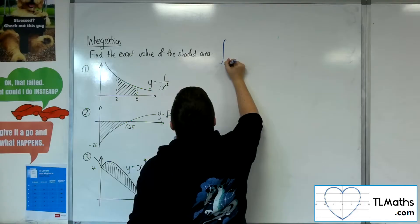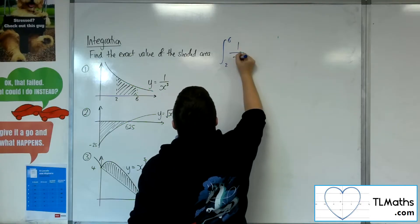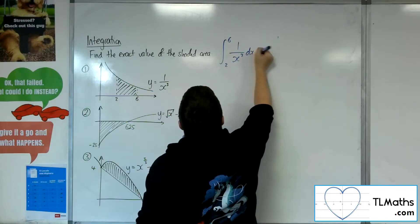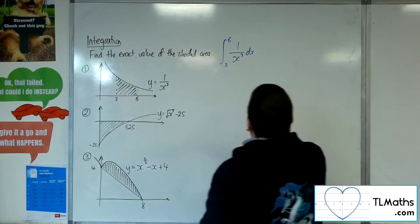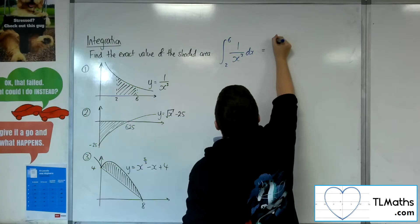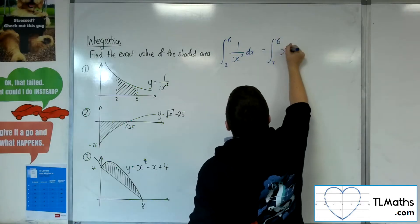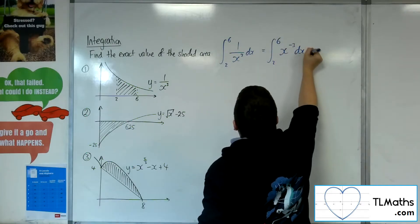So this is what I want to find, the integral of 1 over x cubed dx between 2 and 6. Now, I want to get that into a format that I can actually work with, so I've got to rewrite that as x to the minus 3 before I can integrate.